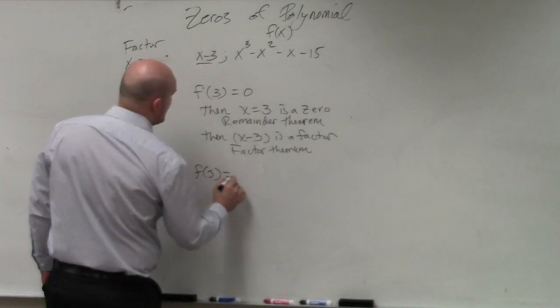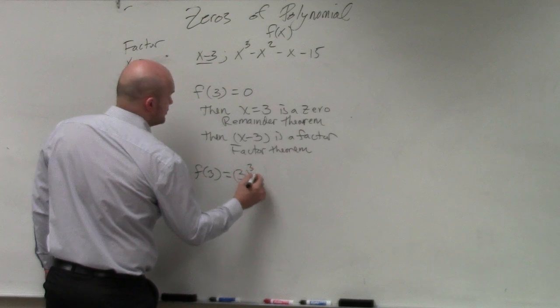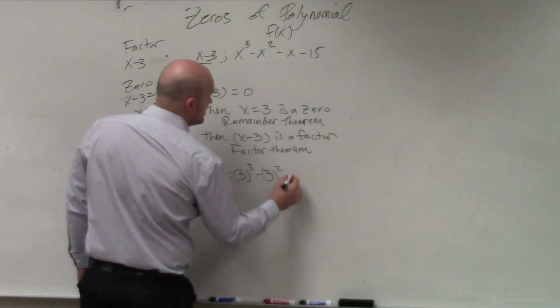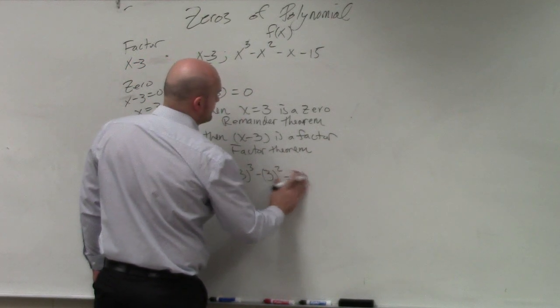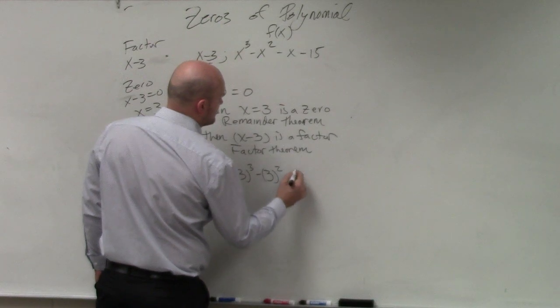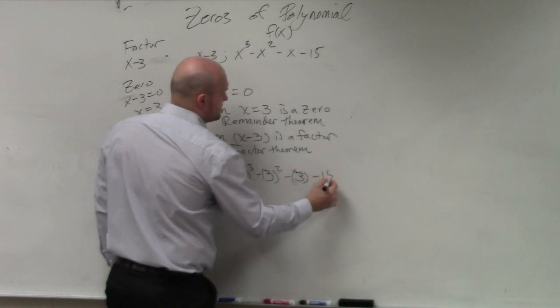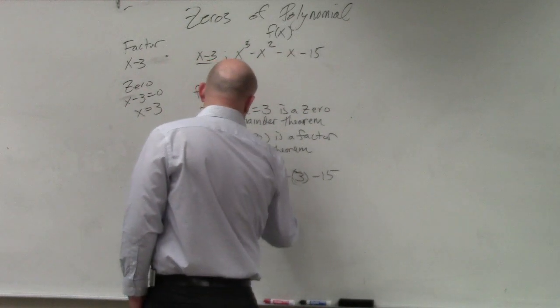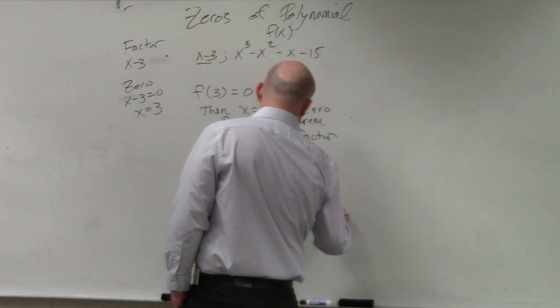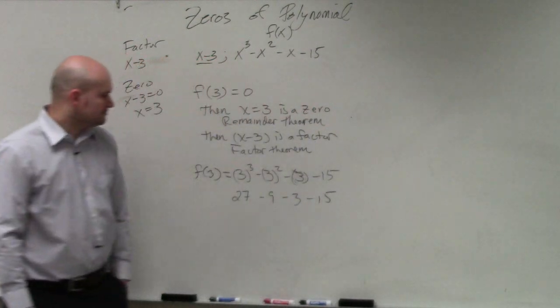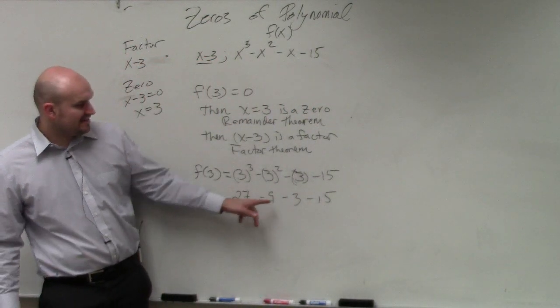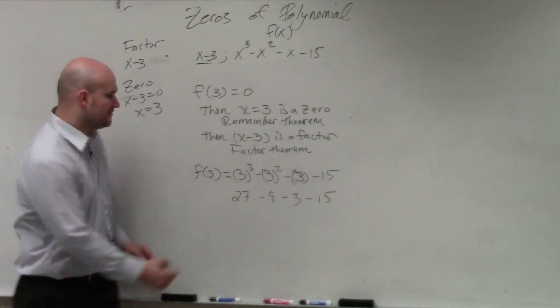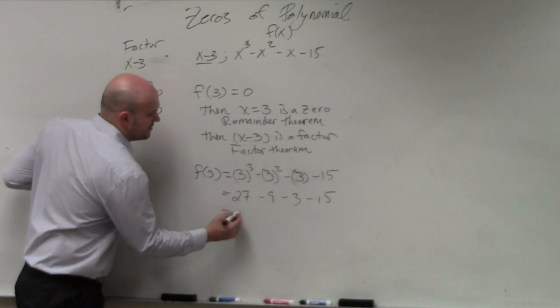f of 3 equals 3 cubed minus 3 squared minus 3 minus 15. So we have 27 minus 9 minus 3 minus 15. So that gives me positive 18. That gives me negative 18. So therefore, that gives me 0.